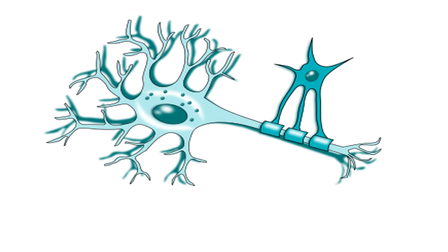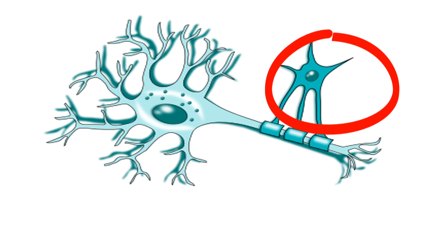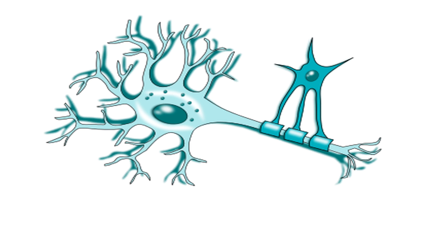Now let's move to oligodendrocytes. Oligodendrocytes have small cell bodies and few delicate processes. They are frequently found in rows along myelinated nerve fibers, because their function is to myelinate the nerve fiber or axon. Keep in mind that they form myelin only in the central nervous system, because in the peripheral nervous system, Schwann cells have that duty. Myelin provides the axon with an insulating coat that greatly increases the speed of nerve conduction along those axons.